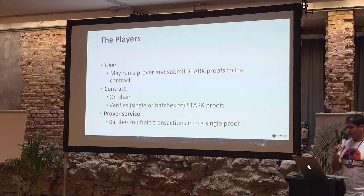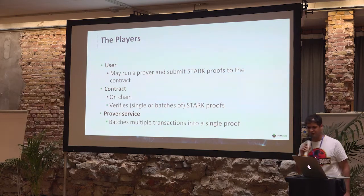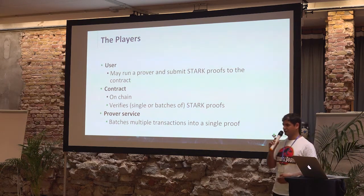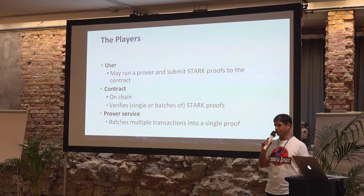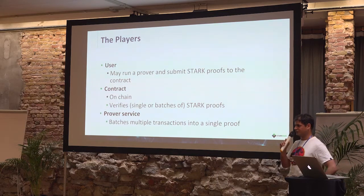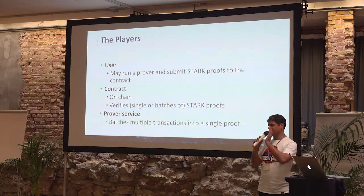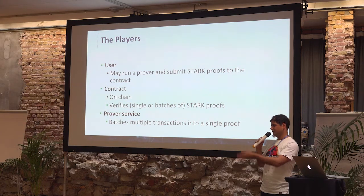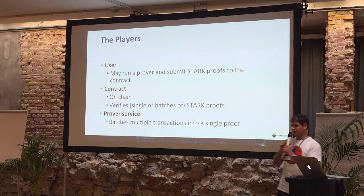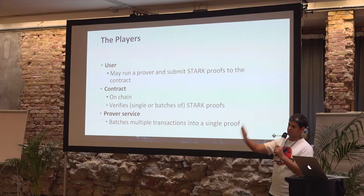The user and the contract are familiar players. What we are adding here is a proof service. The idea of this proof service is that he doesn't have to be trusted and he cannot censor transactions. What he can do is take multiple shielded transactions — he doesn't know to whom those transactions are paying — but he can take a batch of shielded transactions and generate for all those transactions together one single STARK proof. He is going to submit: here are 1,000 nullifiers, here are 1,000 new commitments, and here is the proof that all of those are correct.